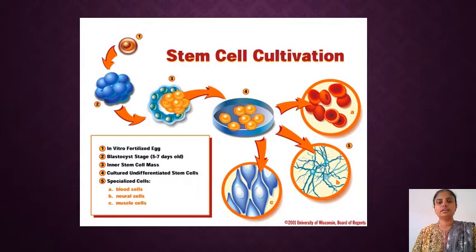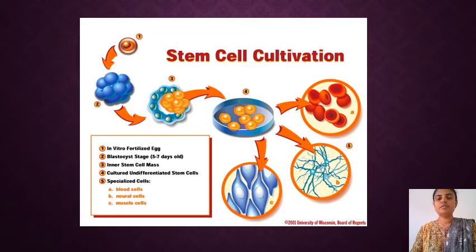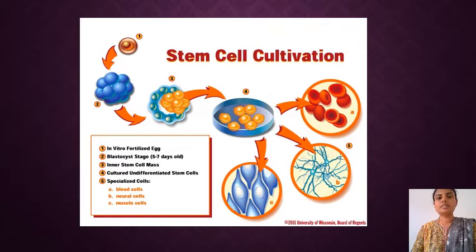The technique of stem cell cultivation is shown in this figure. Stem cells are extracted from the blastocyst stage and cultivated so that they are converted into different types of cells — blood cells, nerve cells, and muscle cells — using stem cell cultivation.